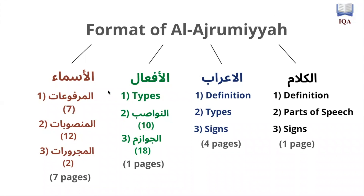So before this, we talked about al-afa'al — the verbs — and we talked about different types of verbs, the different things that will make the verb mansoob, which are the nawasib, and the different things that will make the verb majzooman, which are called al-jawazim. Now we're going to start talking about al-asma, nouns.